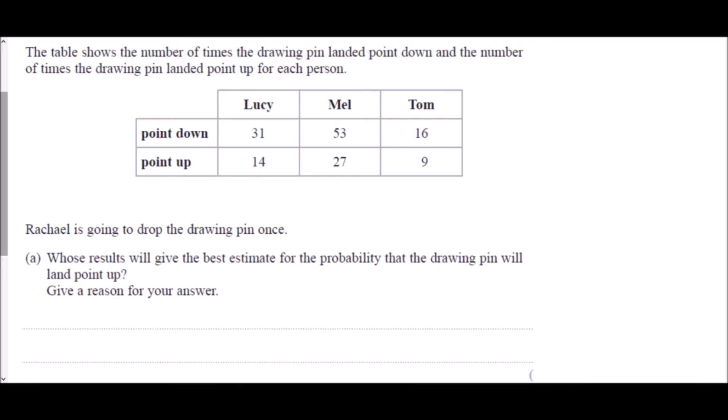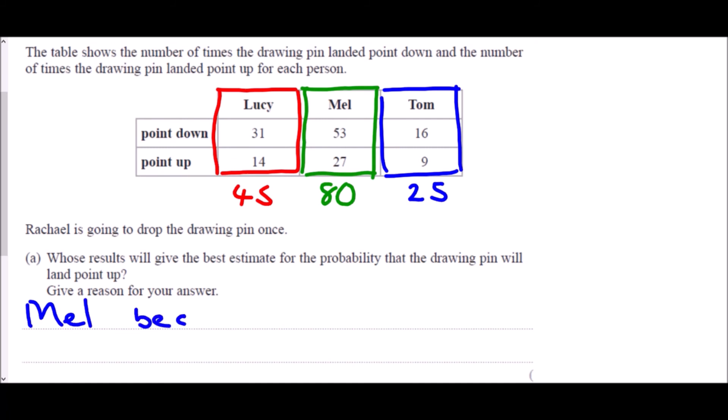So what we need to think about is each of these people - if we want to know who is going to give us the best estimate, we need to think about how many tests did they actually do? And so if we have a look, Lucy did 31 and 14, so she did 45 tests. Mel did 53 plus 27, and so Mel did 80 tests. Tom did 16 plus 9, which is 25 tests. So whose results are going to be most reliable? Well, in this case, the most reliable results are the ones where we've done the most of them. And therefore, Mel would be the best because she has done the most tests.